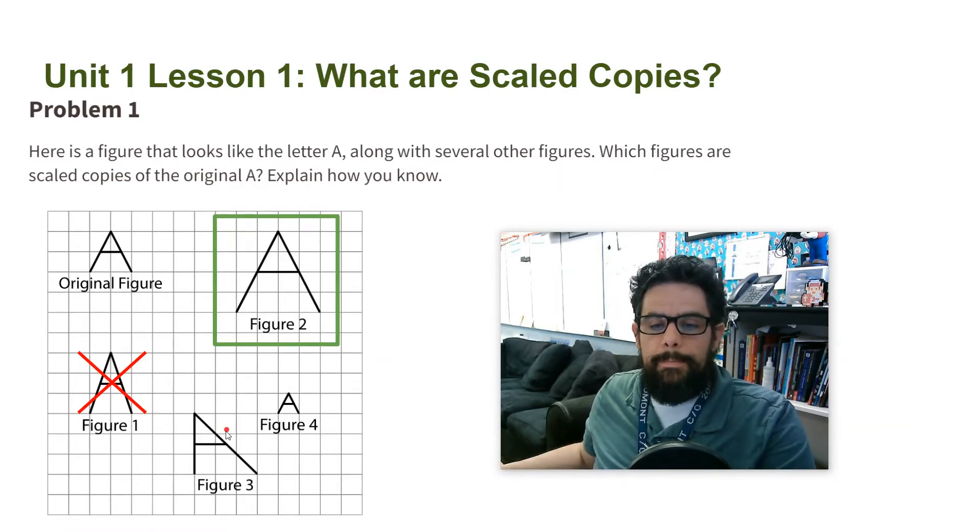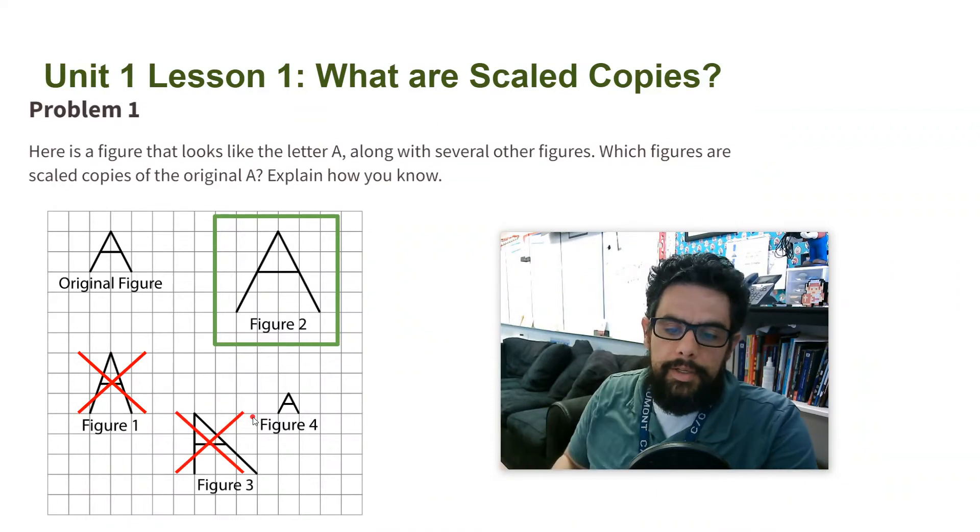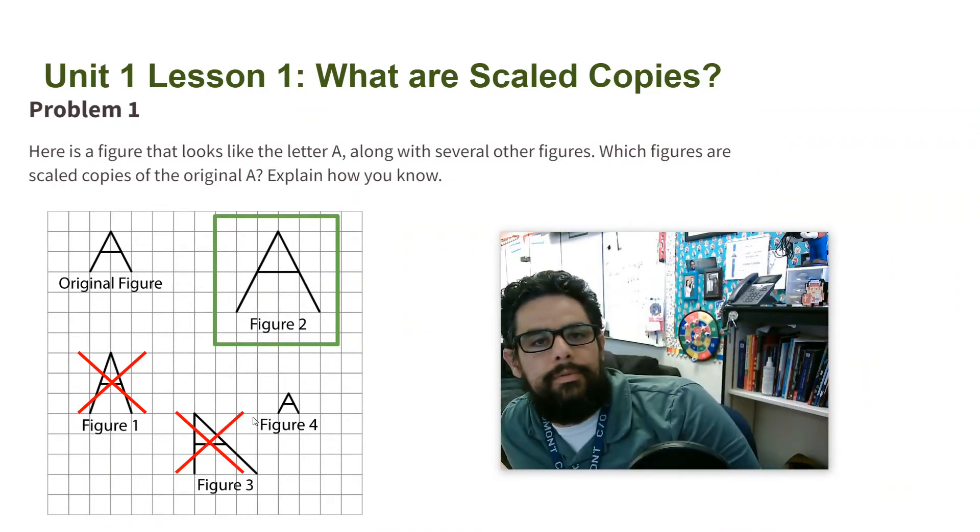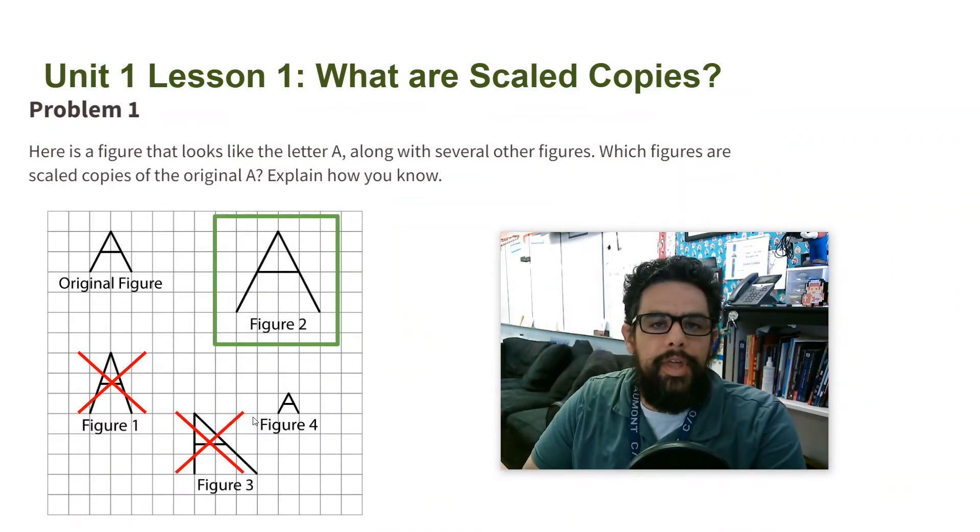Okay, Figure Number 3 is not a scaled copy. You see how Figure Number 3 is leaning back that way? So that means it's not a scaled copy. It changed the shape, it looks different.